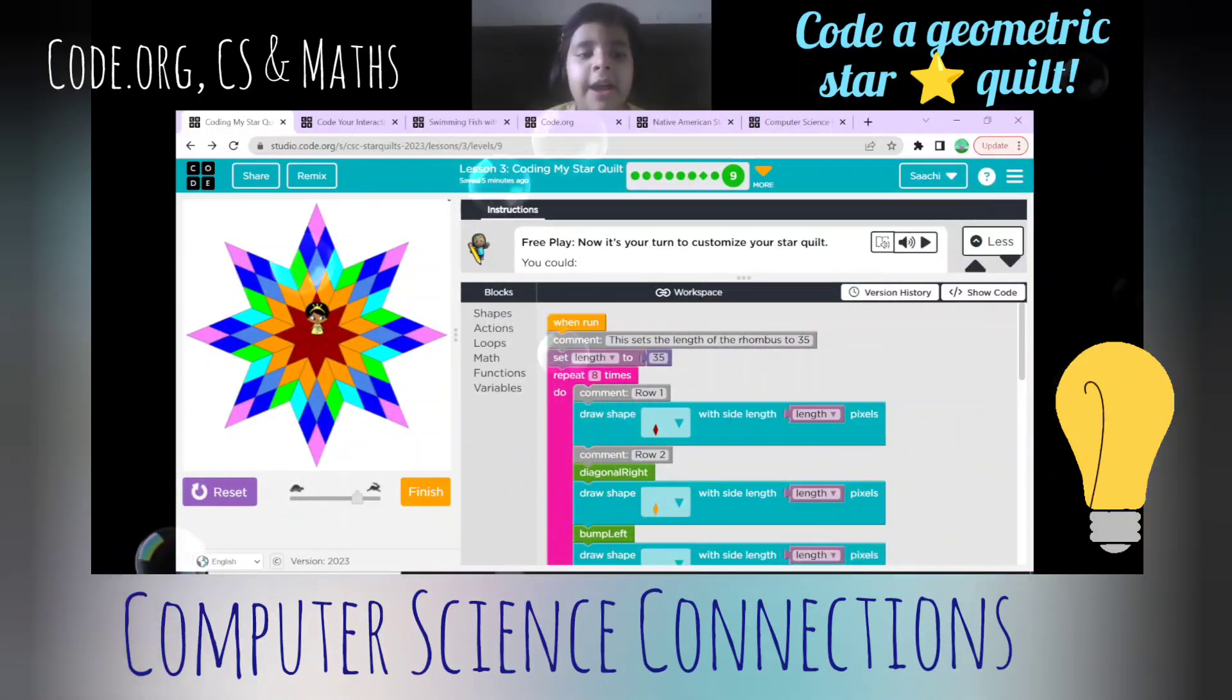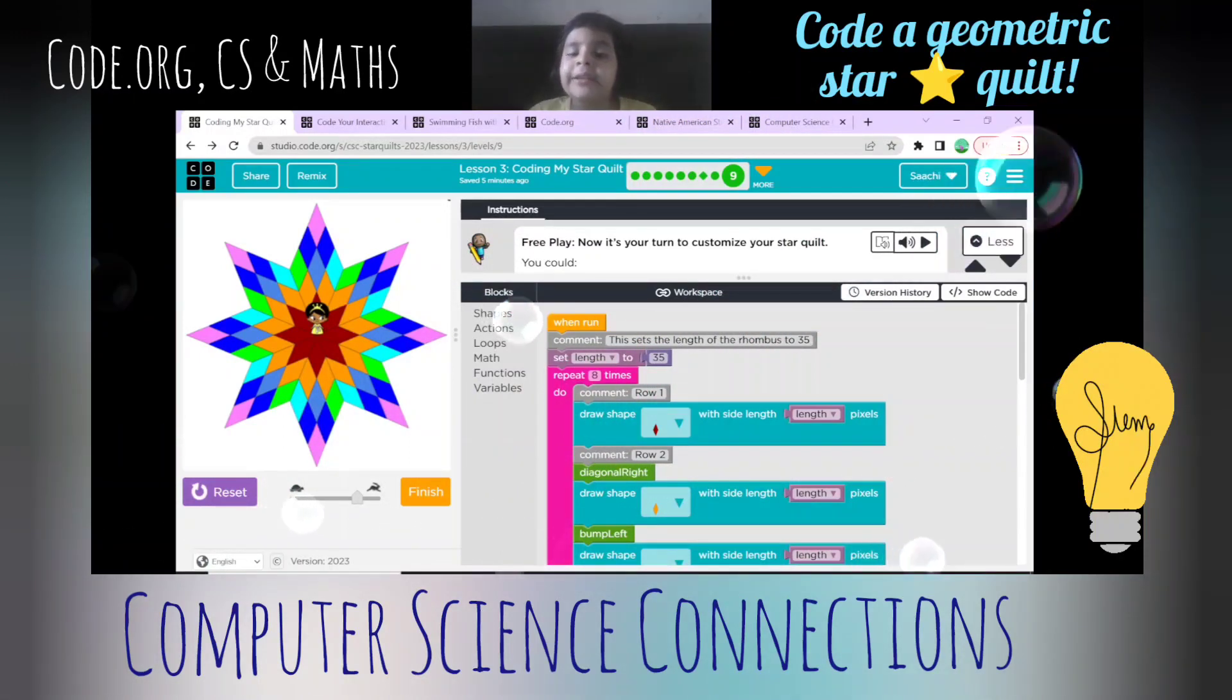Now I put a loop. So first, row one is complete with red rhombus. If I change the color, it will change the color here also.